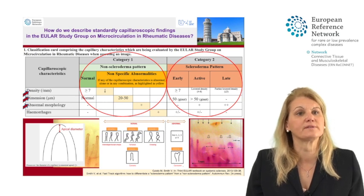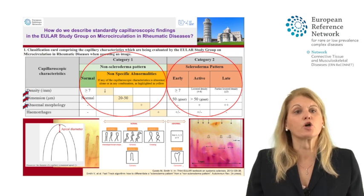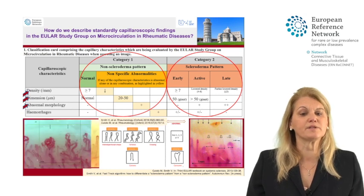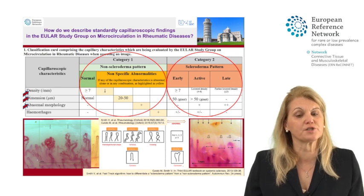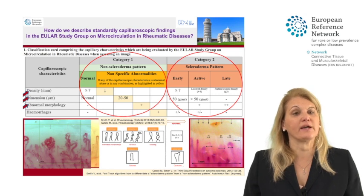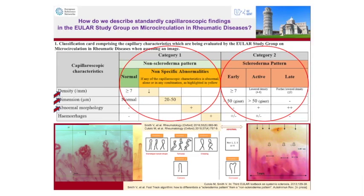Of note, as we will see further in the fast-track algorithm, the combination of very diminished capillary density — here I see only two capillaries — combined with abnormal shapes is also called a scleroderma pattern, more specifically a late scleroderma pattern. Lastly, we evaluate on capillaroscopic images the bleedings or hemorrhages.